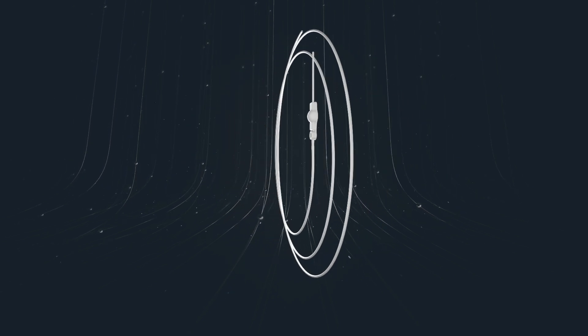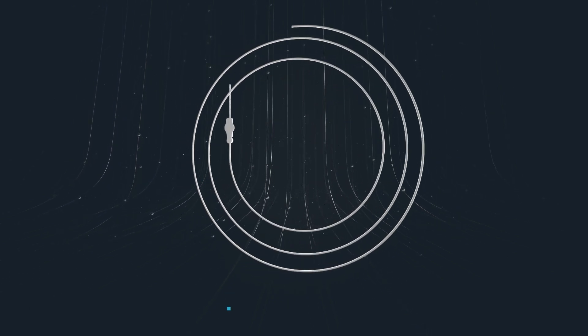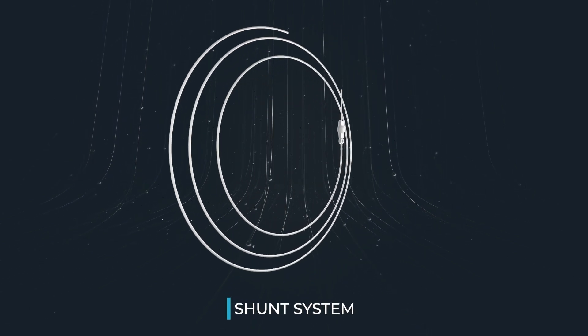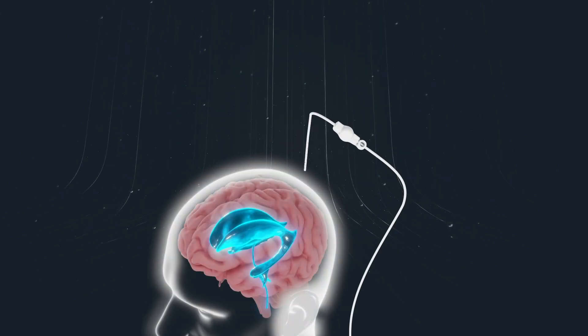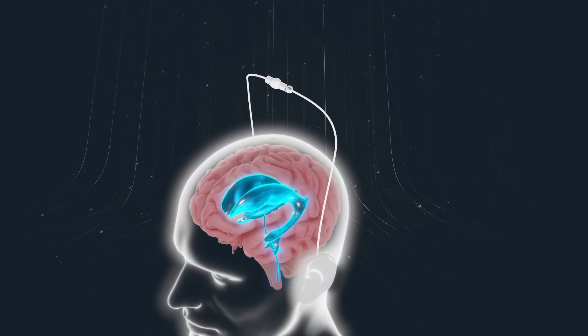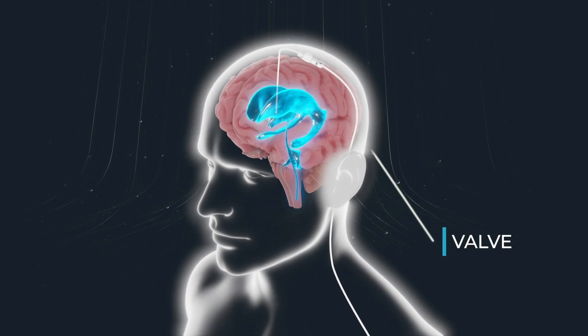The most common treatment for hydrocephalus is a medical device called a shunt that drains excess fluid from the brain to another part of the body. A small hole is made in the skull and a flexible tube is placed in the ventricle of the brain. This tube is connected to a valve that helps regulate how much fluid leaves the brain.